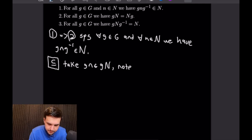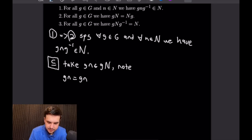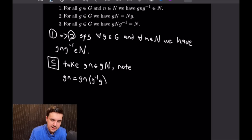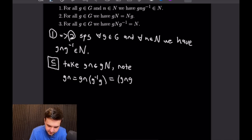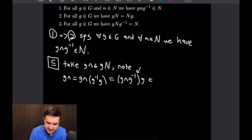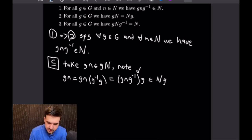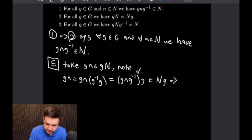We note that gn equals gn, and then right-multiply by the identity written as g⁻¹g. Associating, this gives g times (ng⁻¹) times g. What we have in parentheses is an element of N by condition 1, and we have a g on the right, which means this is an element of the right coset Ng. That completes the forward inclusion: gN is a subset of Ng.